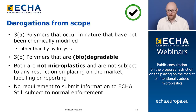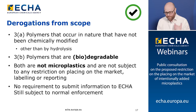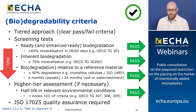Moving on to derogations from scope. Derogation 3a covers polymers that occur in nature and have not been chemically modified other than by hydrolysis, recognizing these materials have existed through evolutionary time and can be considered inherently biodegradable. Derogation 3b builds on 3a to derogate synthetic polymers that can be demonstrated to be biodegradable. Importantly, under this restriction, any materials derogated under 3a or 3b are not considered microplastics and are therefore not subject to any restriction, labeling, or reporting requirements.